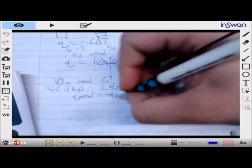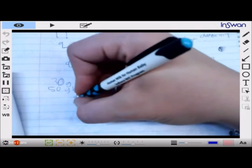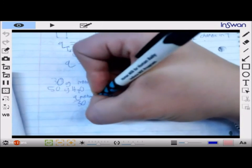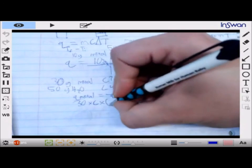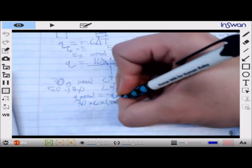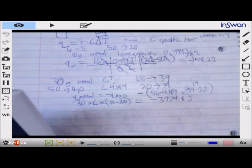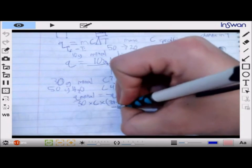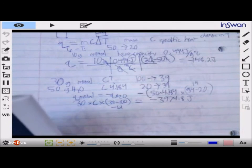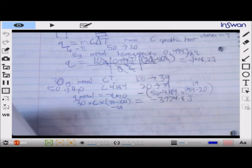And that is equal to 30 times unknown c times 39 minus 100, and so that would be negative 61. So we're going to take our 3974.8, our negative 3974 divided by negative 61, then we're going to divide by our 30.